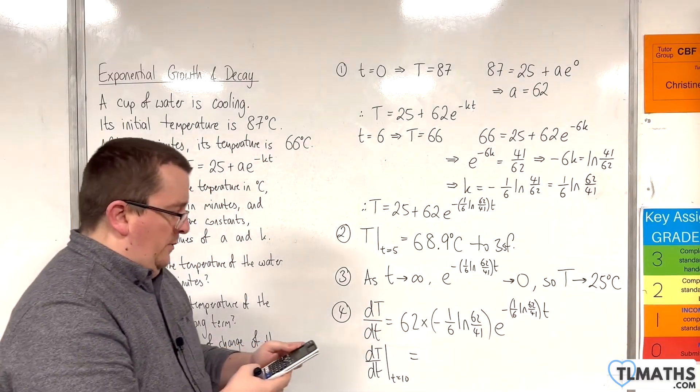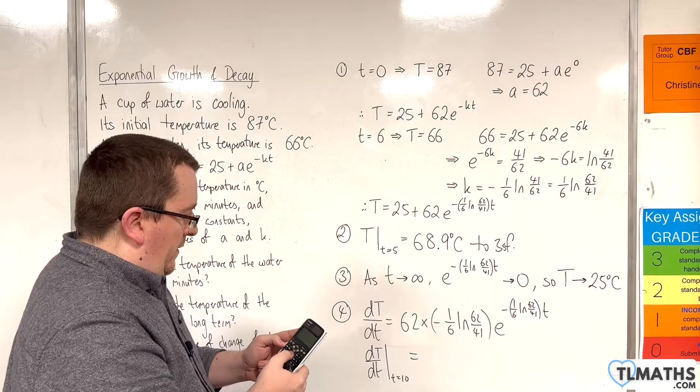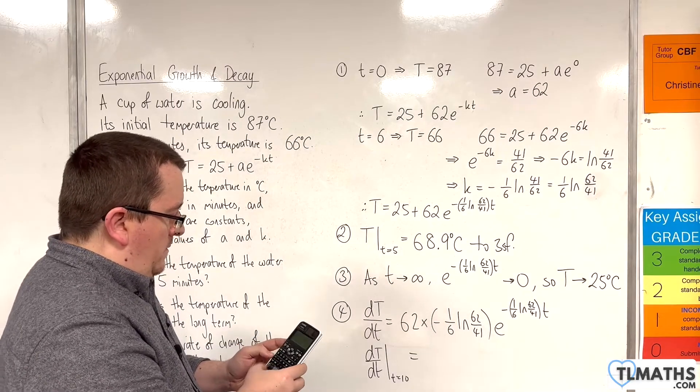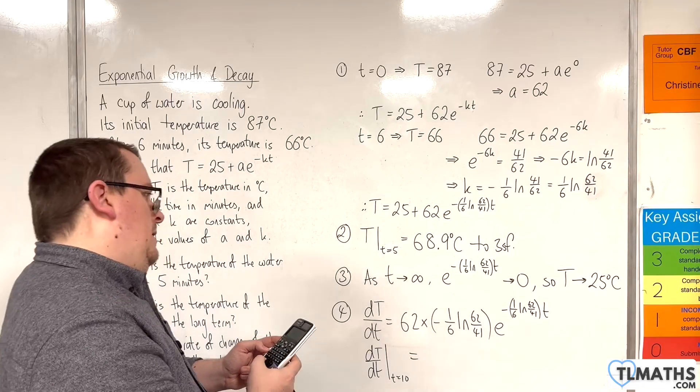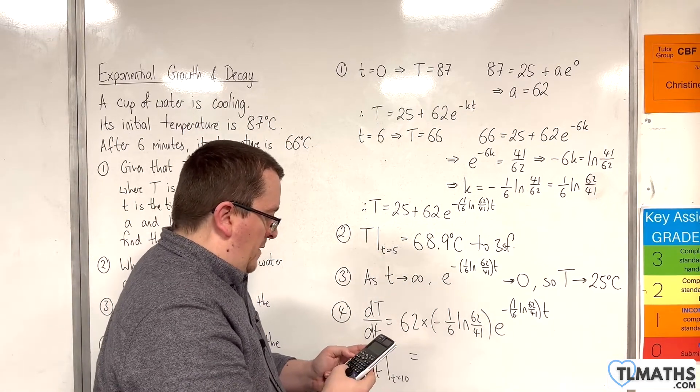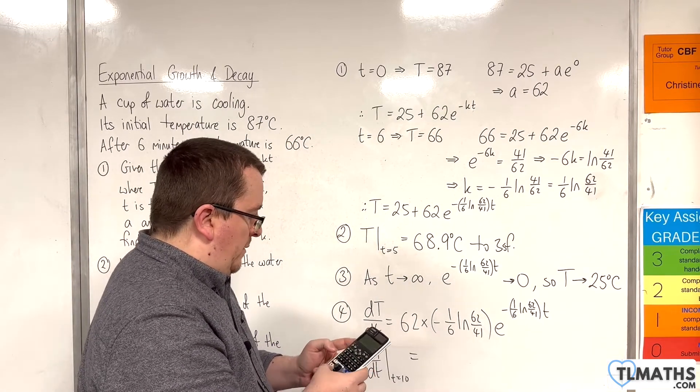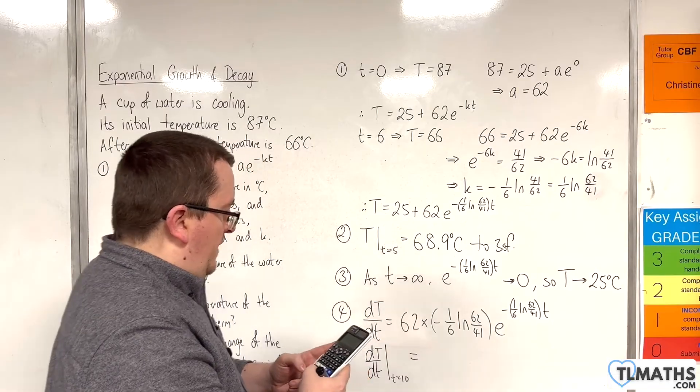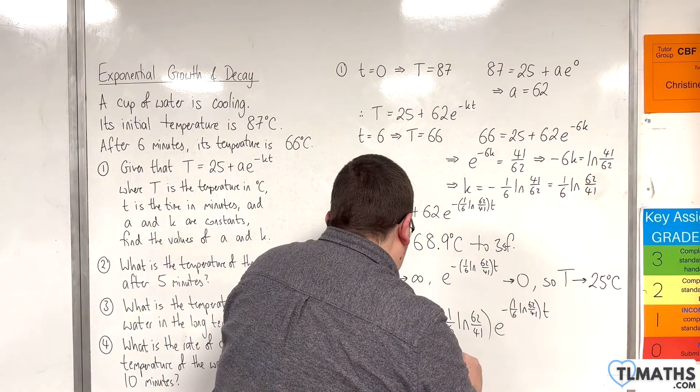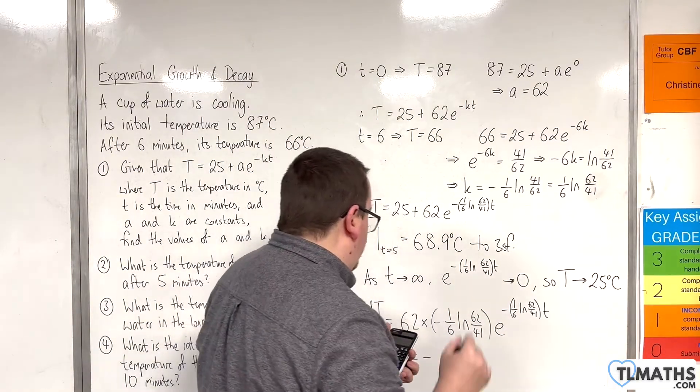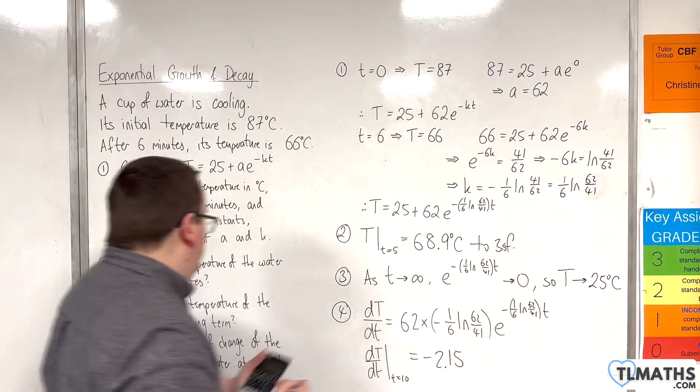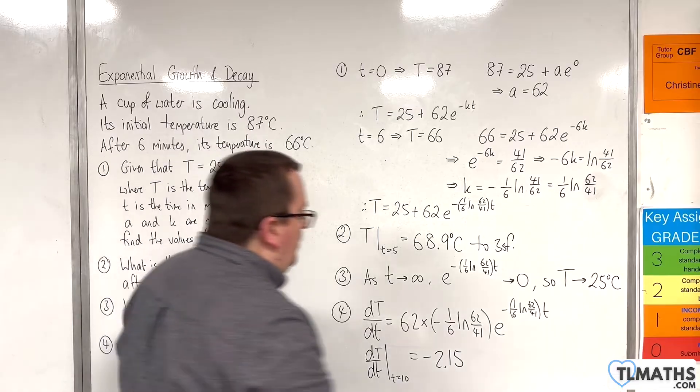So 62 times by minus 1 sixth times natural log of 62 over 41. Then times by e to the power of minus 1 sixth times natural log of 62 over 41, times by 10. And we get minus 2.145038109. So minus 2.15.